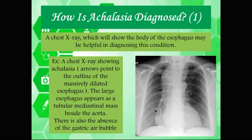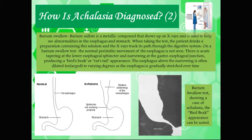So how is achalasia diagnosed? A chest X-ray showing the body of the esophagus may be helpful. Below is an example of a chest X-ray showing achalasia, where the arrows point to the outline of the massively dilated esophagus. Due to long-standing food retention, the esophagus has grown to a massive size. The large esophagus appears as a tubular mediastinal mass beside the aorta, and there is also the absence of the gastric air bubble.